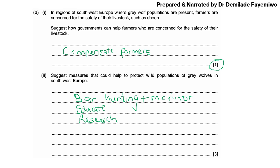That's all for this video. The full video will be for students who are on memberships, so do consider signing up. It is cheaper than a Netflix subscription — less than seven dollars a month — and you can cancel at any time. You can use it during your exam period and cancel once your exams are done. Members get more detailed, more explanatory, and longer videos covering full papers. Until the next time, goodbye.